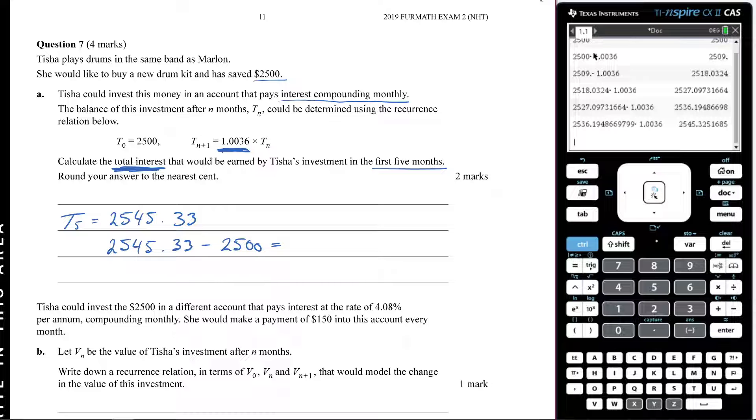So I'm going to go 2545.33 minus 2500, hit enter. And that's going to leave me with $45.33. And that's going to be my answer, $45.33. I have made that in interest.